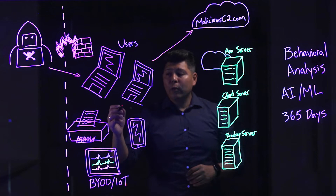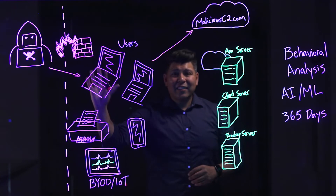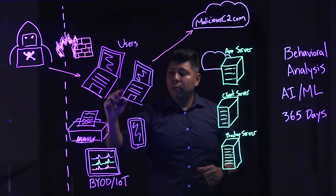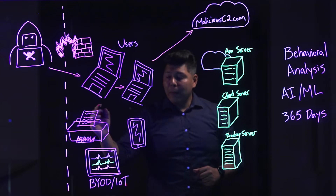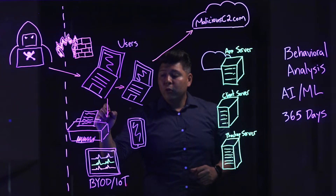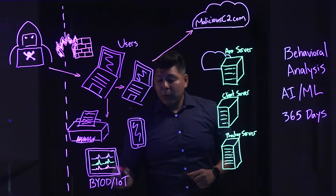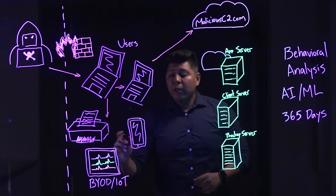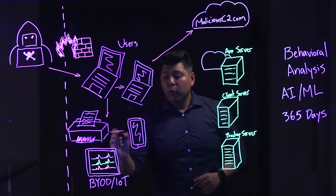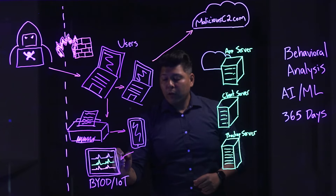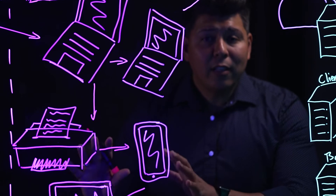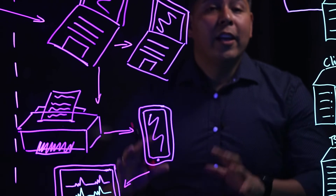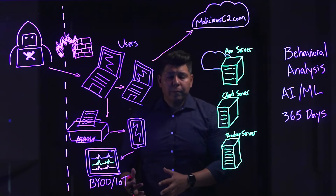Next, they're going to move laterally. Maybe they got access to this machine, and now they're going to move laterally to this one. Or maybe they'll move laterally to other devices on the network — your BYOD devices, IoT, OT devices. They're going to try to proliferate across your network and gain access and compromise as many devices as possible in order to maintain that foothold.